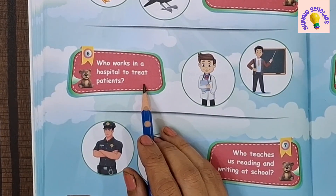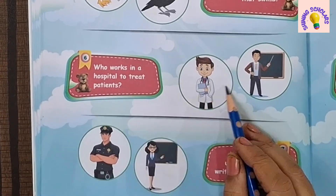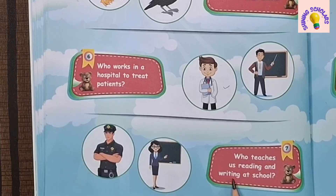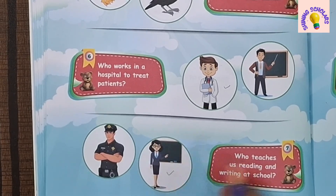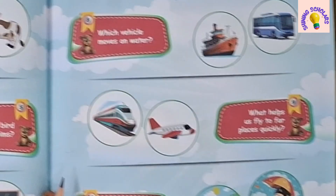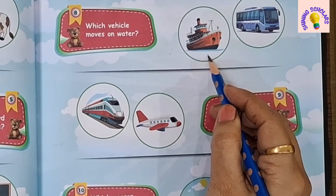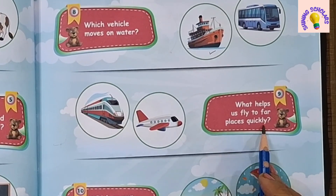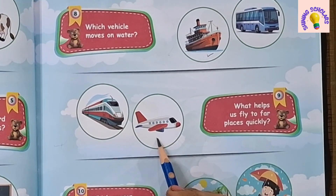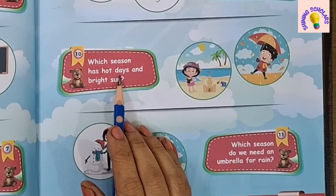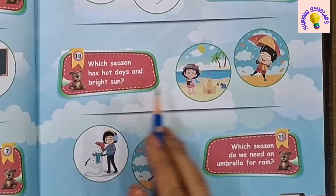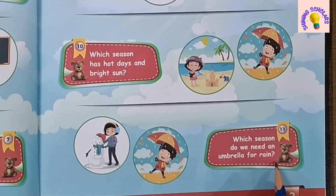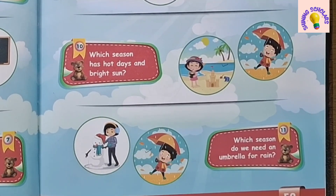Who works in a hospital to treat patients? Doctor. Who teaches us reading at school? Teacher. Which vehicle moves on water? Ship moves on water. What helps us fly to far places quickly? Aeroplane. Which season has hot days and bright sun? Summer season. Which season do we need an umbrella for rain? Rainy season.